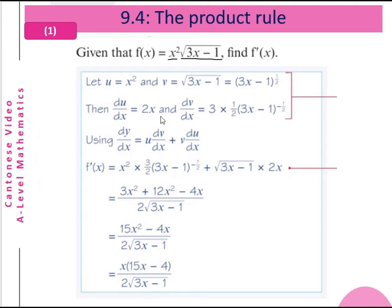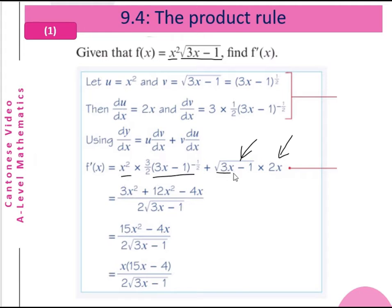Then du/dx equals 2x, and dv/dx equals 3 multiplied by half times (3x minus 1) to the power of minus half. So using the product rule, dy/dx equals u·dv/dx plus v·du/dx. So f'(x) equals x squared multiplied by 3/2·(3x minus 1) to the power of minus half, plus square root of (3x minus 1) multiplied by 2x. After calculation, we get the fraction x(15x minus 4) over 2 times square root of (3x minus 1).